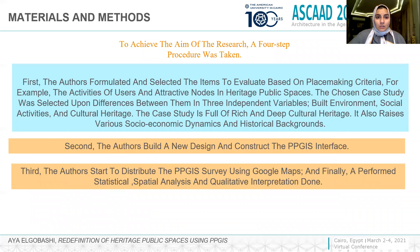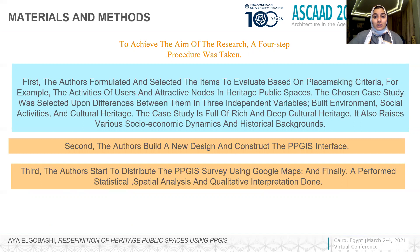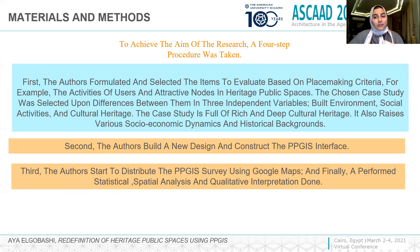The materials and methods to achieve the aim of the research involved four steps. First, we selected the criteria based on place-making principles. Second, we built and constructed the PPGIS interface. Third, we conducted the survey using Google Maps. Finally, after entering the map data into GIS, we performed a spatial statistical analysis and qualitative interpretation.